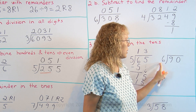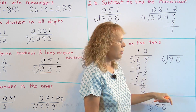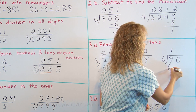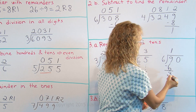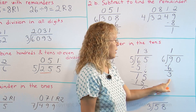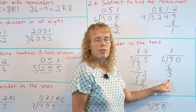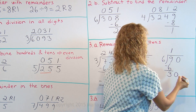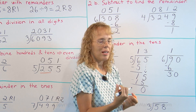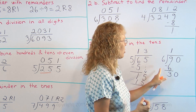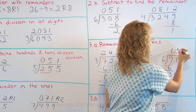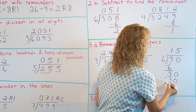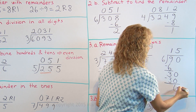One last example: 6 goes into 9 one time. 1 times 6 — multiply and subtract. Then we drop down the 0 ones, giving us 30 ones combined. 6 goes into 30 five times, evenly. 5 times 6 is 30. Subtract to find the remainder of 0.